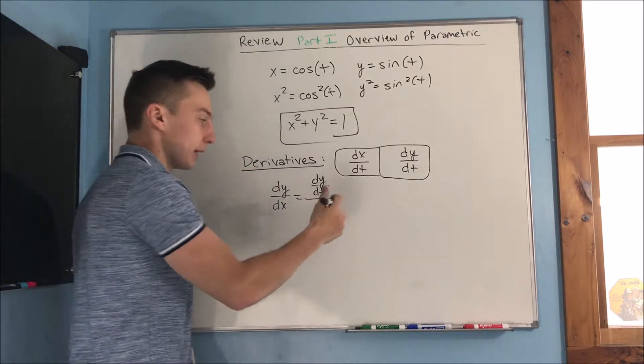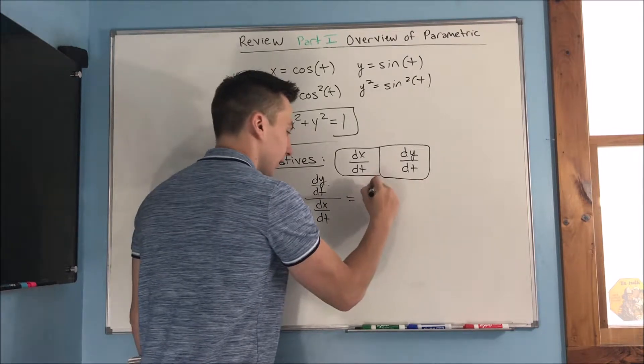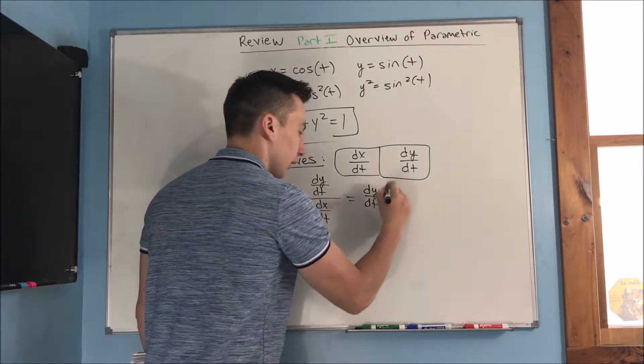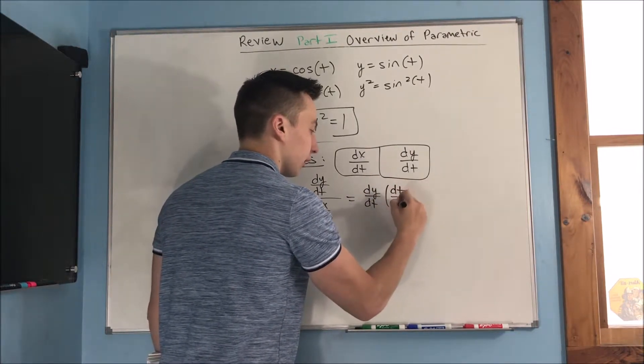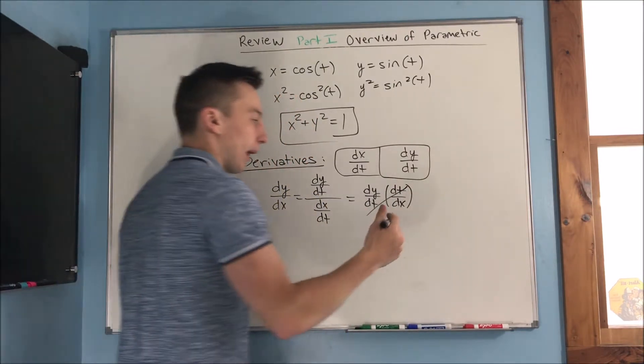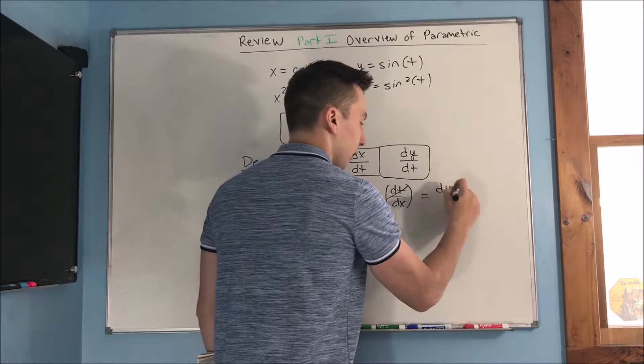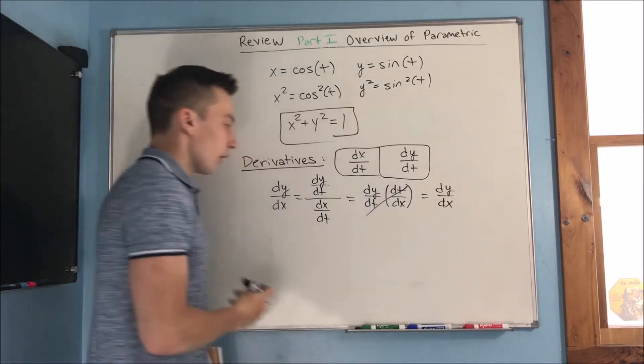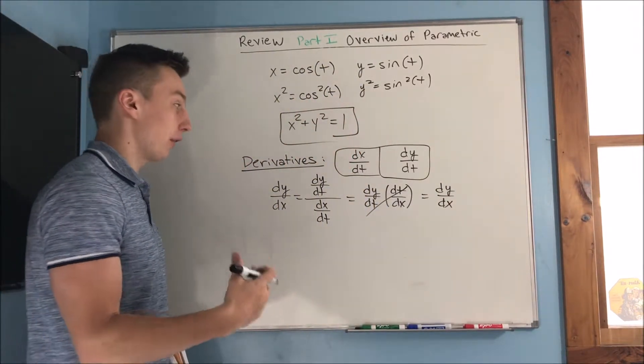This makes sense because this would then be equal to dy dt times dt dx. The dt's you can kind of think of as canceling out right there. And that gives you back your dy dx.